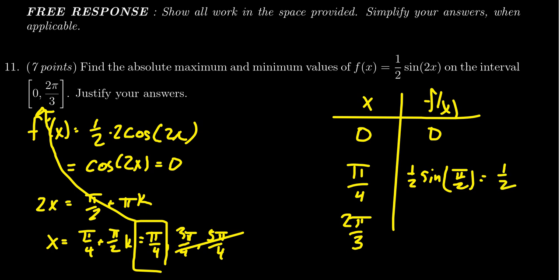For the last one, at x=2π/3, we put that into our function: (1/2)sin(2 × 2π/3) = (1/2)sin(4π/3). Be aware that 4π/3 is in the third quadrant of the unit circle, so sine will be negative.